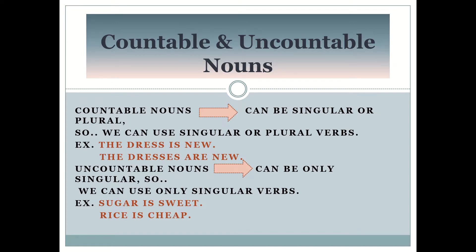Uncountable nouns can be only singular, so we can use only singular verbs. For example: 'Sugar is sweet.' 'Rice is cheap.'